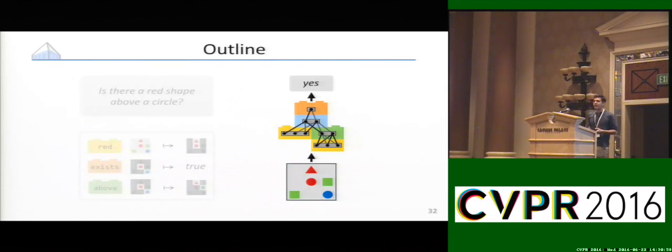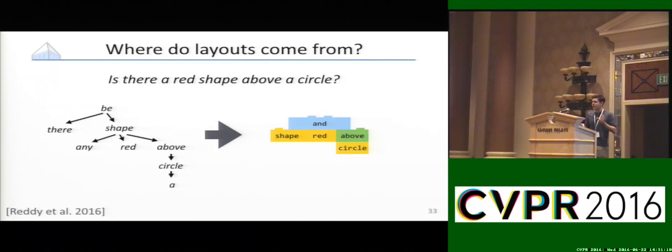The last question we have to answer is how we actually train this kind of thing. Before we can answer that question, we have to talk about where these network structures that we're building up on the fly come from. The good news is that we have really good off-the-shelf tools for this from the natural language processing community. There are things out there that you can download that will take a dependency parse, a representation of the syntax of the sentence, and give you something that basically looks like the network structure that you would want to write down. So we're going to assume that this is a solved problem.